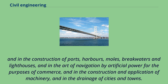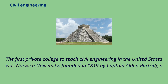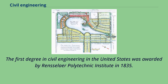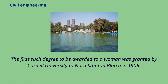The first private college to teach civil engineering in the United States was Norwich University, founded in 1819 by Captain Alden Partridge. The first degree in civil engineering in the United States was awarded by Rensselaer Polytechnic Institute in 1835. The first such degree to be awarded to a woman was granted by Cornell University to Nora Stanton Blatch in 1905.